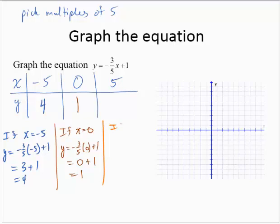And if x equals 5, y would equal negative 3 fifths of 5 plus 1. And so that would be negative 3 plus 1, which is negative 2.